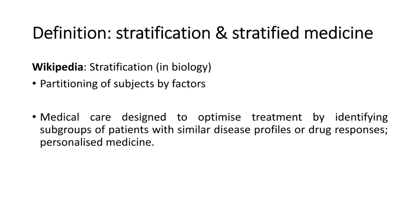In a very simple definition, stratification in biology can be defined as grouping or partitioning of subjects by factors. Stratification has different applications in different fields including mathematics, social sciences, etc. But here we are talking about biological factors and risk factors which will help us to group or partition our patients into different groups. Technically, medical care is designed to optimize treatment by identifying subgroups of patients with similar disease profiles or drug responses.